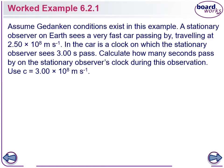Assume Gedanken conditions exist in this example. Remember, Gedanken just means thought experiment, so this wouldn't physically be possible, we're just assuming it can be. A stationary observer on Earth sees a very fast car passing by, traveling at 2.5 times 10 to the 8 meters per second. In the car is a clock on which the stationary observer sees 3 seconds pass. Calculate how many seconds passed by on the stationary observer's clock during this observation.